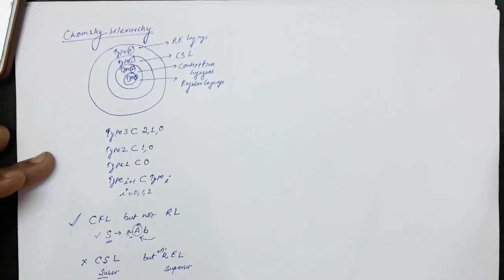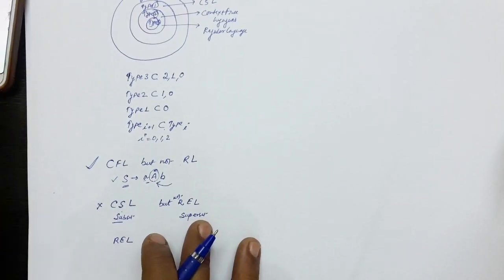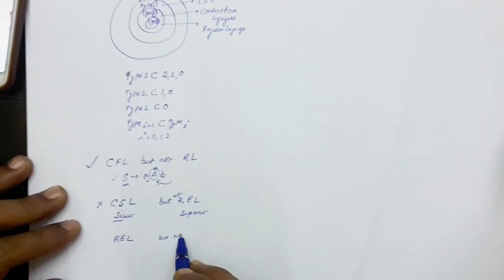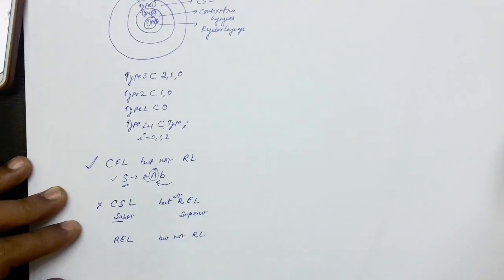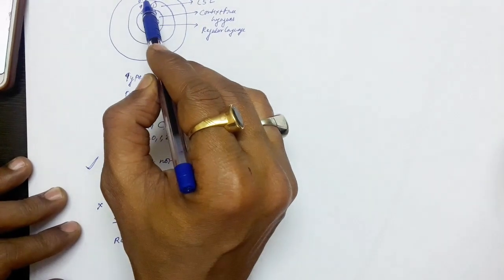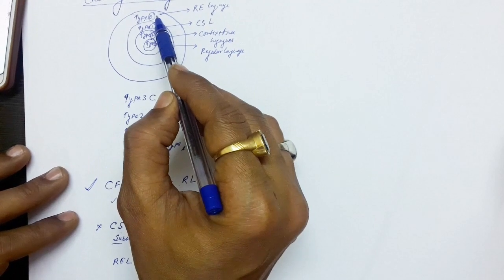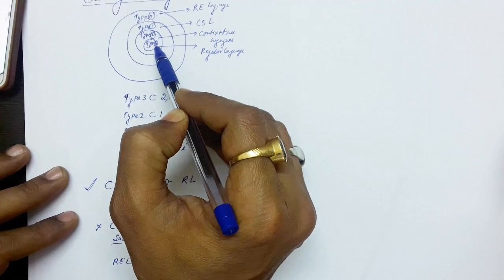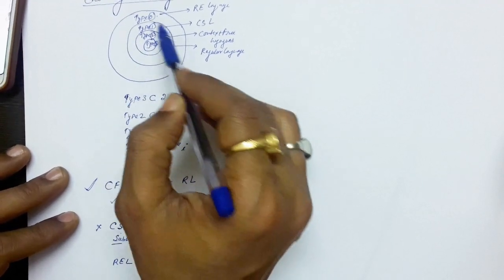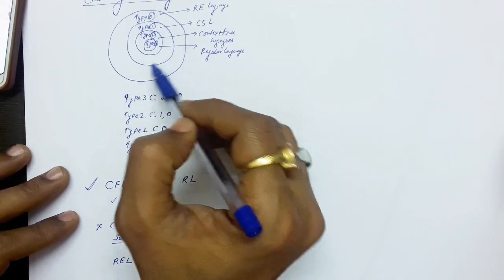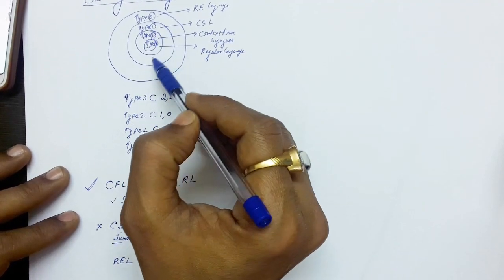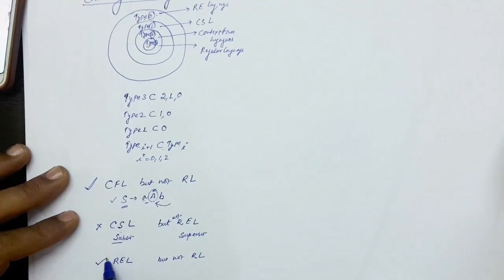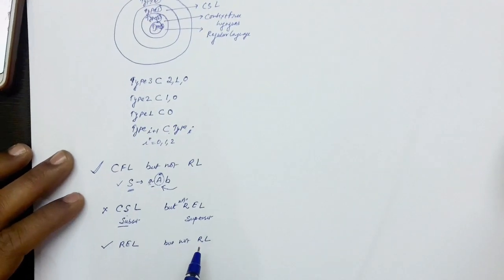Another example: a language is recursively enumerable but not regular. This is possible. Recursively enumerable means Type 0, the bigger set. It is not necessary that every Type 0 language is also regular, since regular is a smaller set. So it is quite possible that a language is recursively enumerable but not regular.